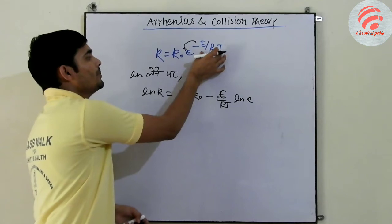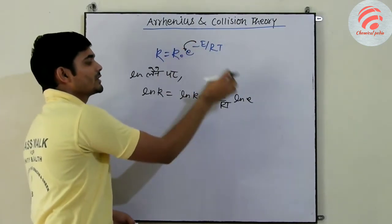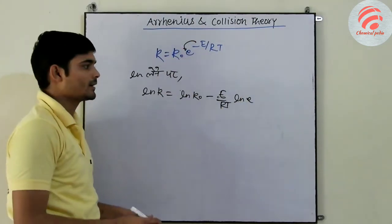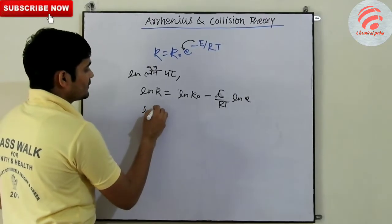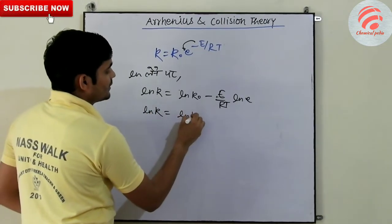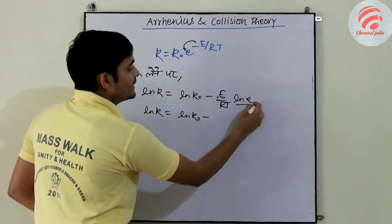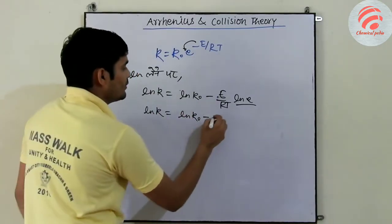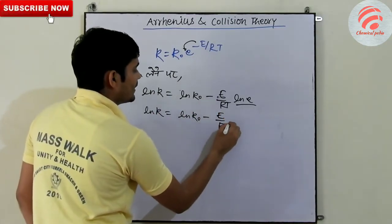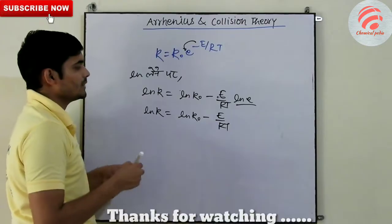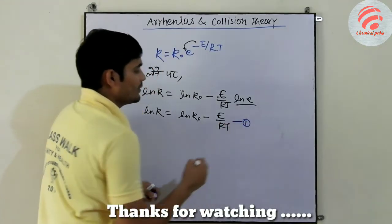This will be equal to E upon RT. ln k is equal to ln k naught minus, ln e value is equal to 1, E upon RT. This will be equation 1.